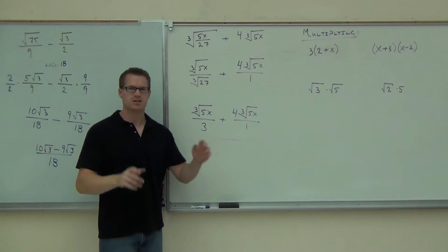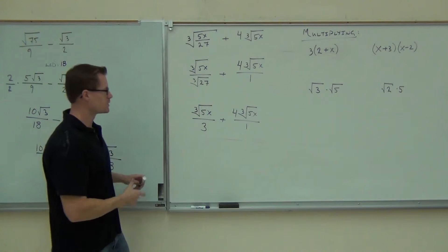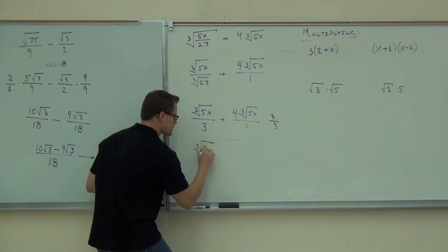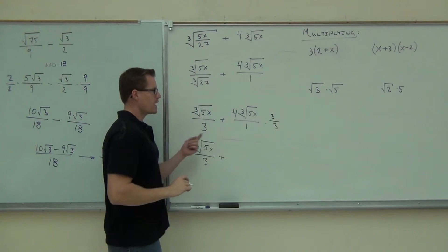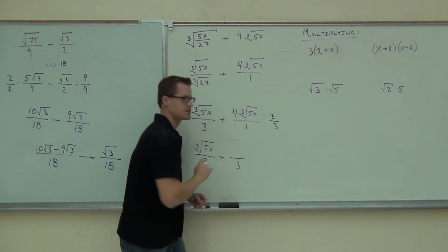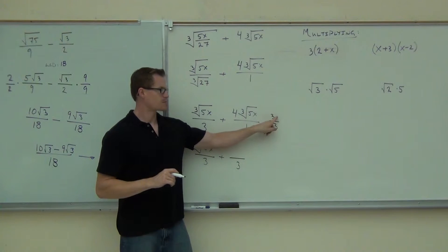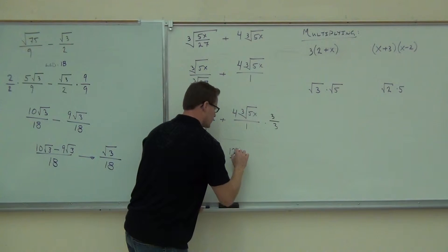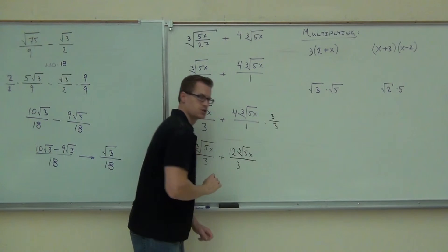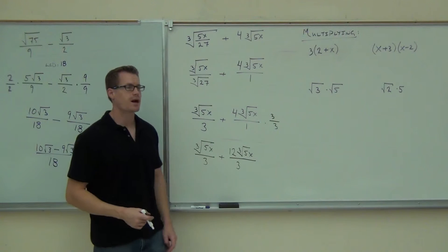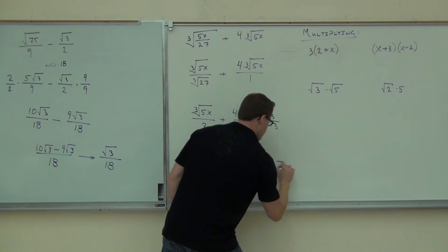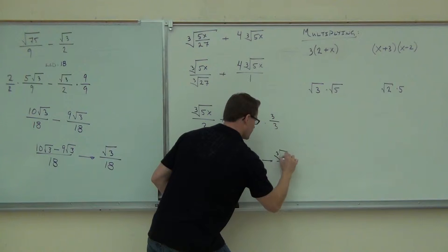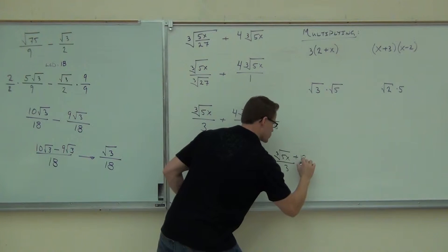The LCD is clearly 3. So we multiply the second fraction by 3 over 3. The first fraction we don't need to multiply. So we're going to have the cube root of 5x over 3, plus — the denominator is 3, and that 3 gets multiplied by the 4, giving us 12 cube root of 5x on the numerator. We keep the denominator the same when adding fractions — we don't add denominators. So we've got cube root of 5x plus 12 cube root of 5x.